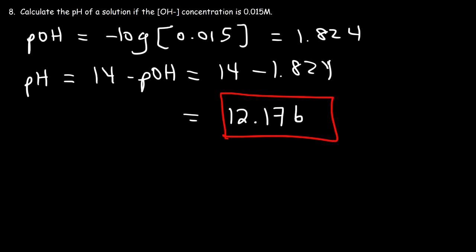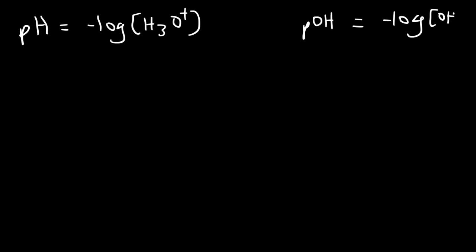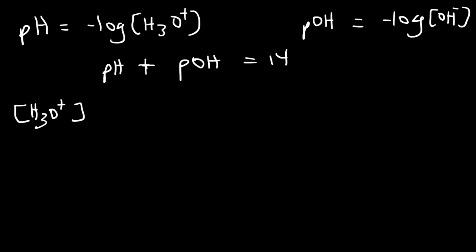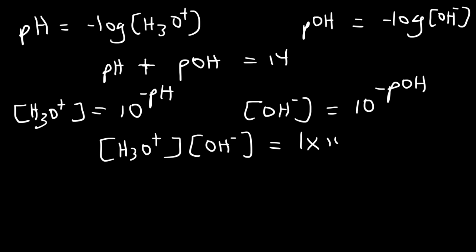That's all the problems in this video. Let's review some basic formulas you need to know. pH equals the negative log of the hydronium ion concentration, or H+ concentration. pOH is the negative log of the hydroxide concentration. pH plus pOH adds up to 14. If you need to calculate H+ or H3O+, it's 10 to the negative pH. Likewise, the hydroxide ion concentration is 10 to the negative pOH. And H3O+ multiplied by OH- equals 1 times 10 to the minus 14.